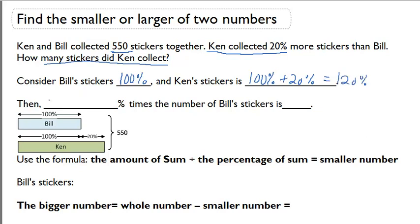That means that 100% plus 120% times the number of Bill's stickers has to be 550. This diagram illustrates what's happening in this problem. Bill has 100%, Ken has 100% plus an extra 20%, and the total has to be 550.